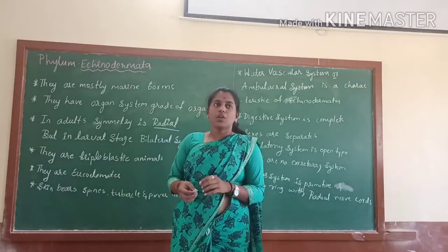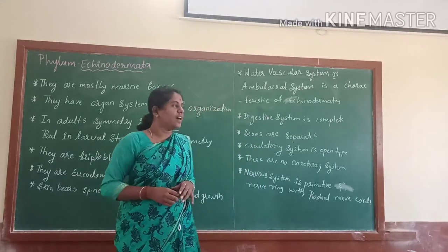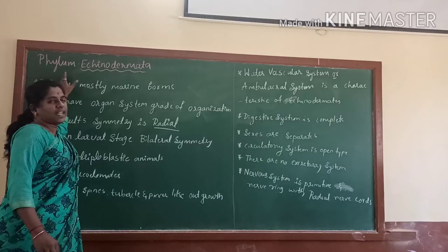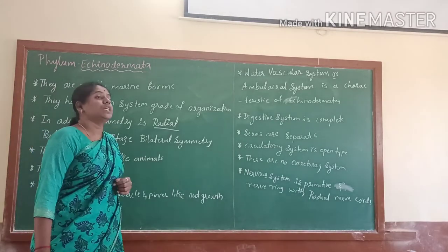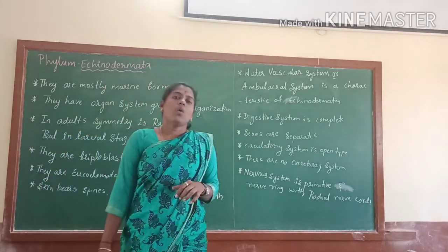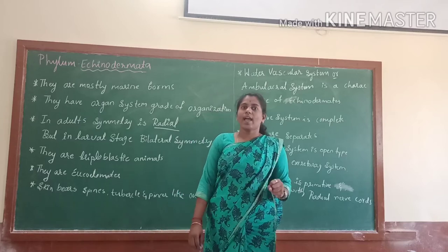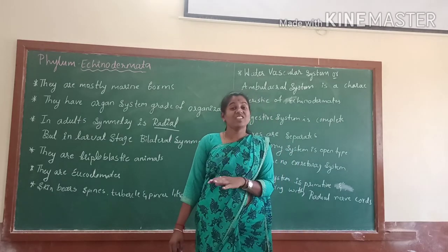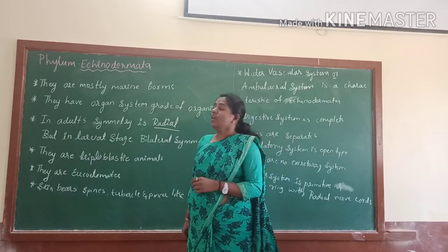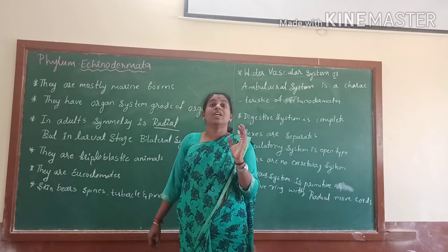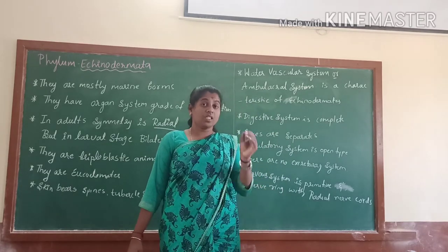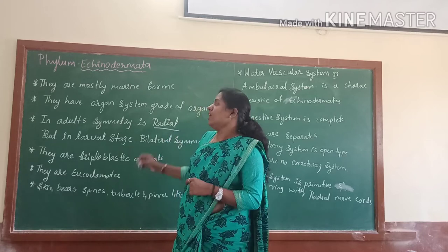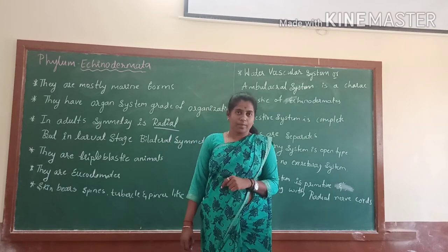Hello my dear students, today we are going to talk about the new phylum that is phylum Echinodermata. Why they are called Echino? Echino means they consist of a spiny body, the hardest body. That is why they are called Echinodermata — 'derma' means skin — they consist of peculiarly spiny skins. That is why they are called Echinodermata.